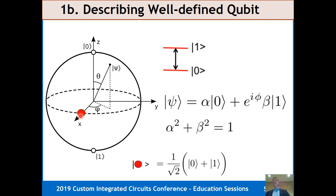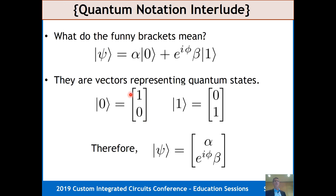The qubit state has to exist on the surface of the sphere — it has a normalization condition. It's either totally zero, totally one, or some linear combination in between, some superposition. The quantum notation uses Dirac bracket notation from the 1930s — they're really just vectors. The zero state is the vector (1,0), the one state is (0,1). It's just a shorthand vector notation.